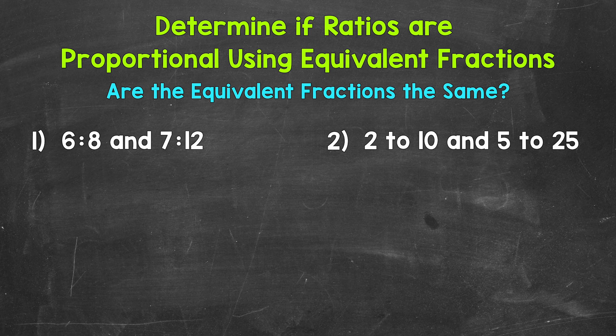Let's jump into number one, where we have 6 to 8 and 7 to 12. When it comes to checking if two ratios are proportional using equivalent fractions, we first need to write the ratios in fractional form. Then we find the least common multiple between the bottom terms of our ratios and rename the ratios as equivalent ratios with that new bottom term.